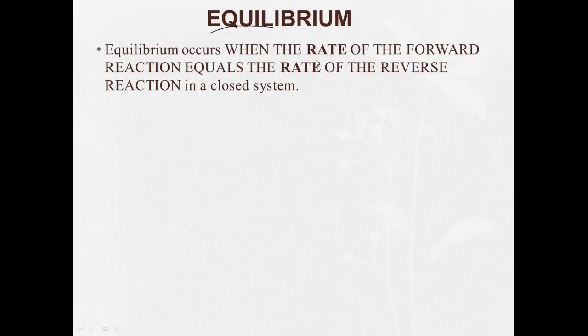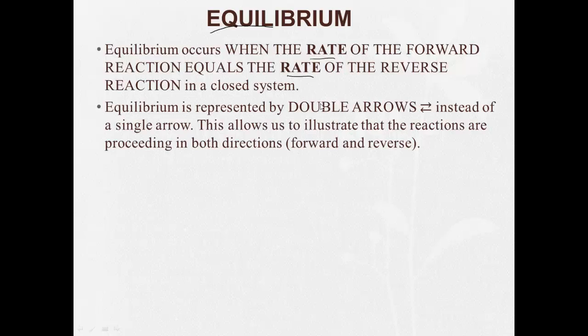Equilibrium occurs when the rate of the forward reaction equals the rate of the reverse reaction in a closed system. It's represented, and we've seen this already, by double arrows instead of a single arrow. This illustrates to us that the reactions are proceeding in both directions, and it tends to happen at the same time.